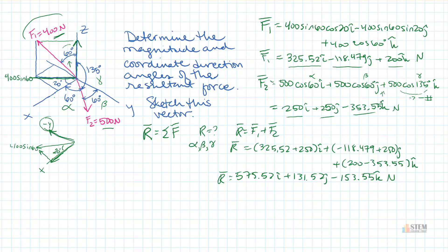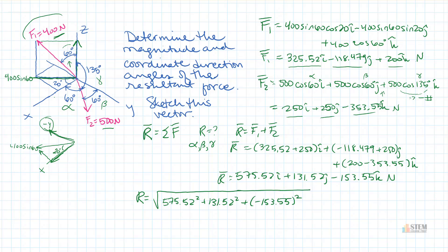Now we have our resultant vector and we want to find the magnitude. We do the square root of the sum of the squares: the square root of 575.52 squared plus 131.52 squared plus negative 153.55 squared. That magnitude is approximately 610 newtons, giving us our magnitude of the resultant force.